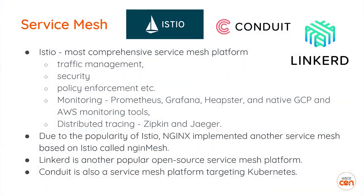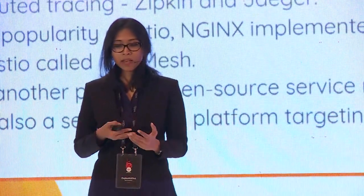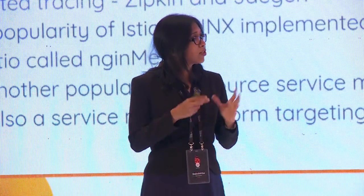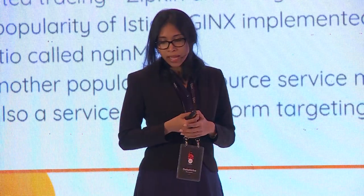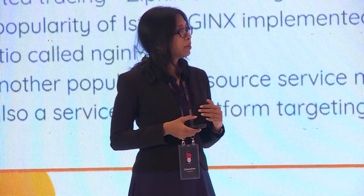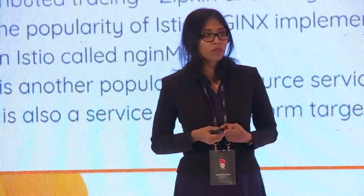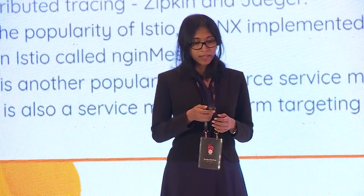Popular service mesh implementations include Istio, the most comprehensive service mesh platform, which does traffic management, security, policy enforcement, and monitoring with tools like Prometheus, Grafana, Heapster, and native GCP and AWS monitoring tools, as well as distributed tracing with Zipkin and Jaeger. Nginx also implemented a service mesh based on Istio called Engine Mesh. Linkerd is another popular open source implementation, and Conduit is a service mesh platform designed specifically for Kubernetes.